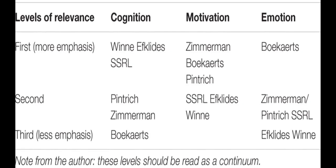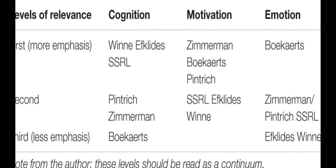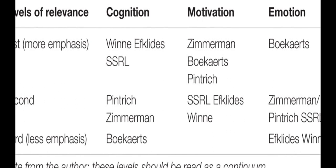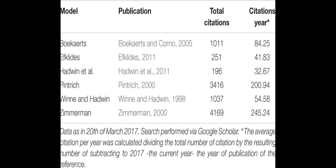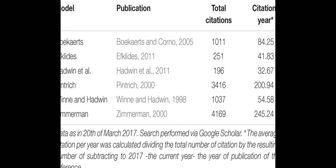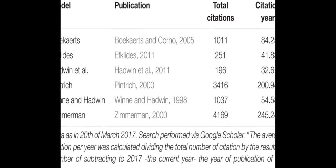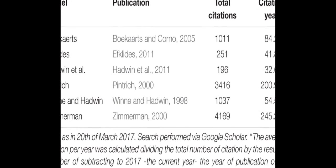The models are then compared in aspects such as phases and sub-processes, how they conceptualize metacognition, motivation, and emotion, top-down versus bottom-up processing, automaticity, and context. The review concludes that SRL models form an integrative framework for research and teaching students to be more strategic and successful.